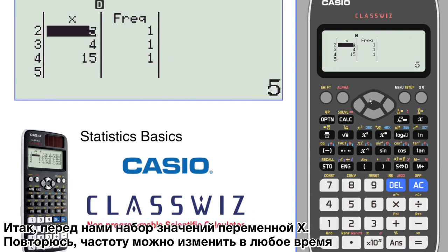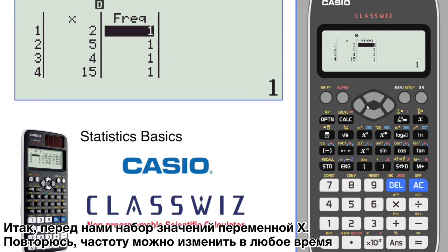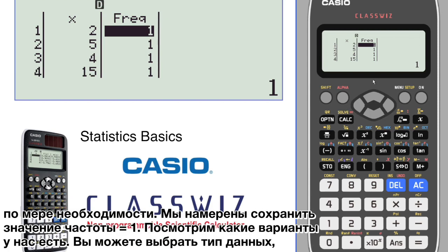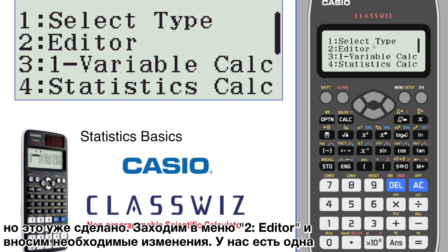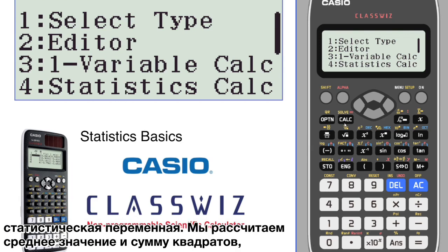So there's a quick data set. You can change those frequencies at any time if you would like — we're going to leave them all at one. Let's see what options we have. You can select the data type, which we've already done, go into the editor and make any changes, or look at one variable statistics. We'll have a look at that.